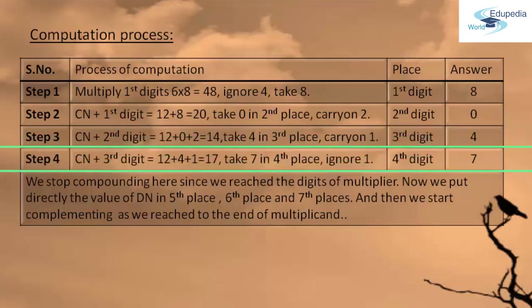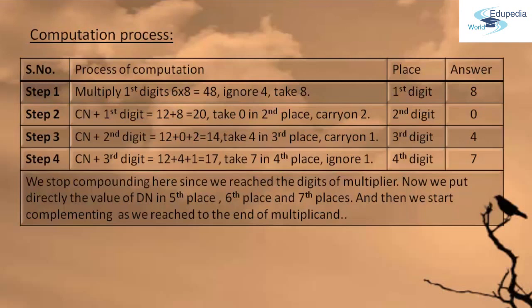Moving to Step 4, we again add CN to the third digit. 12 plus 4 gives 16, but there is a carry-on of 1, giving 17. It is a two-digit number, so we take 7 in the fourth place and ignore 1. We stop compounding here because we have reached the number of digits of the multiplier.